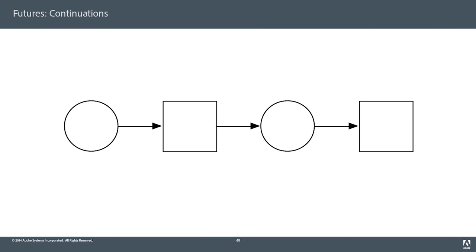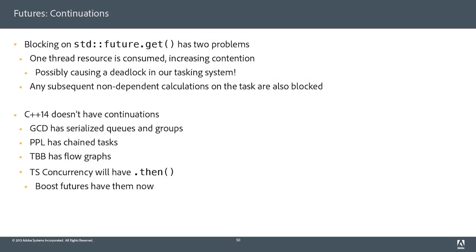A continuation is: circles are functions, boxes are values. We have a function yielding a result that we want to give to another function yielding a result. future.get has two problems: first, a performance problem in that it causes us to stop; second, it's actually worse — it possibly causes deadlock in our tasking system. Part of slowing us down is that any subsequent non-dependent calculations on the task are also blocked from executing.